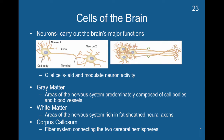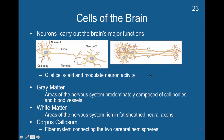Axons travel down the length of the spinal cord. In some areas they can be repaired if cut, in others they cannot. Groupings of axons form nerve tracts. The corpus callosum is a fiber system connecting the two cerebral hemispheres, and we'll be talking more about it in later chapters because people behave very differently when it is cut.